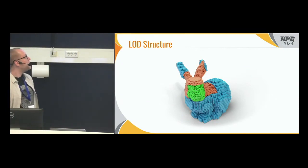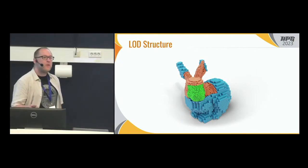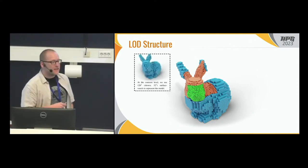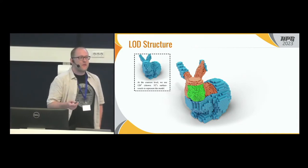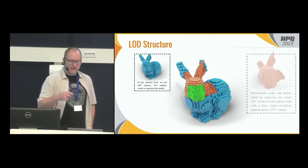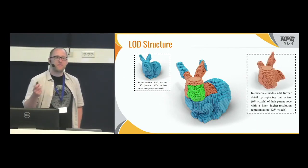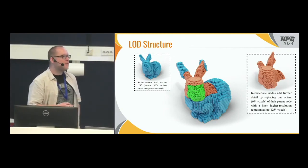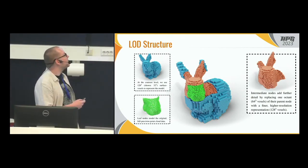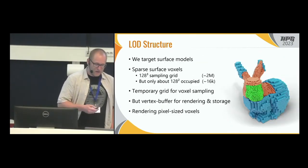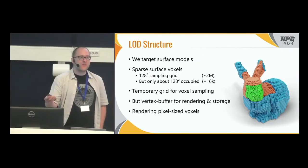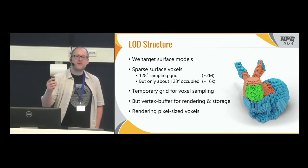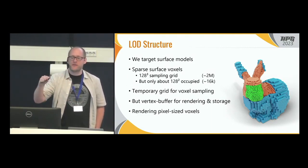This is the structure we're generating with our method. It's an octree where we have voxels in inner nodes and the original point cloud data in the leaf nodes. The root node is a very coarse voxel representation of the whole point cloud. You can replace one octant of the root node with a higher detailed child node, and eventually render the original point cloud data stored in the leaf nodes. It's important to note that we target surface models — not volumetric, not solid voxel models, just voxels on the surface.